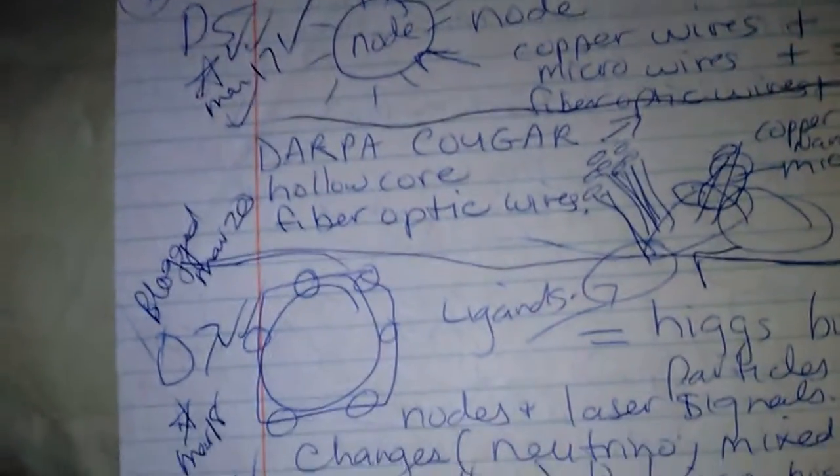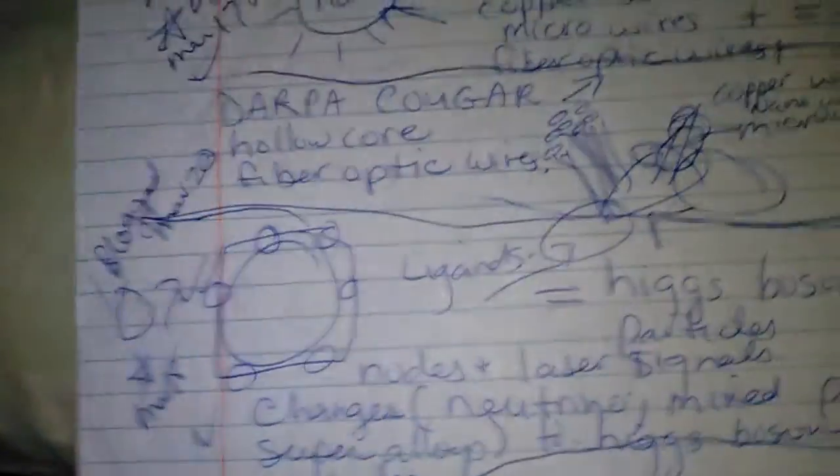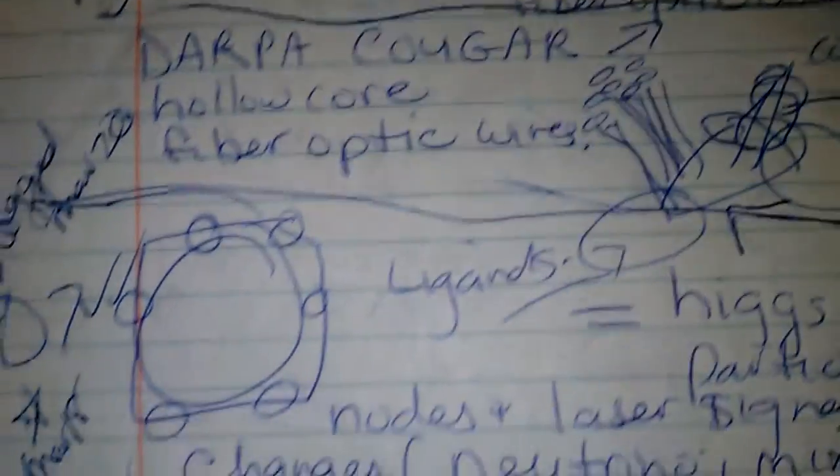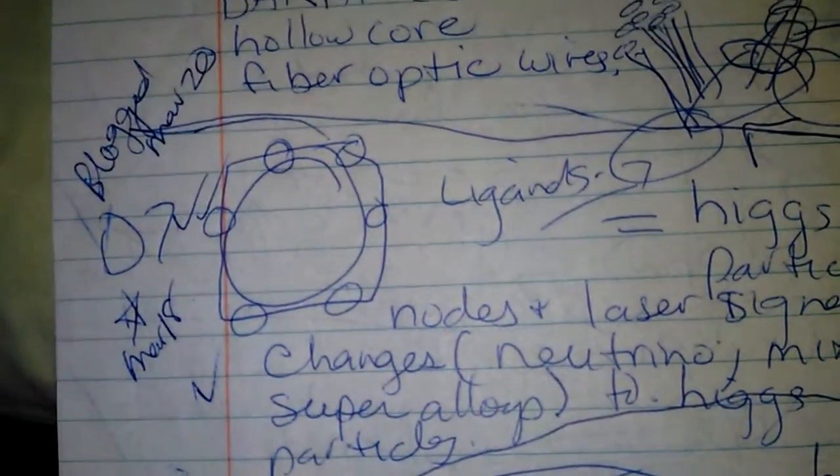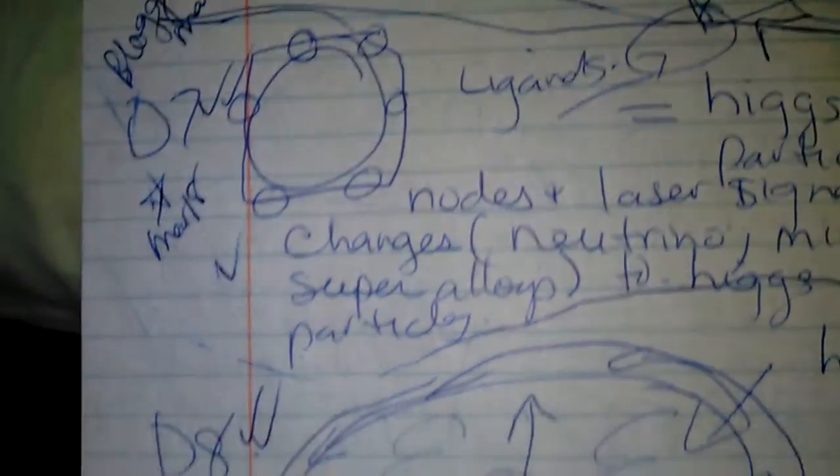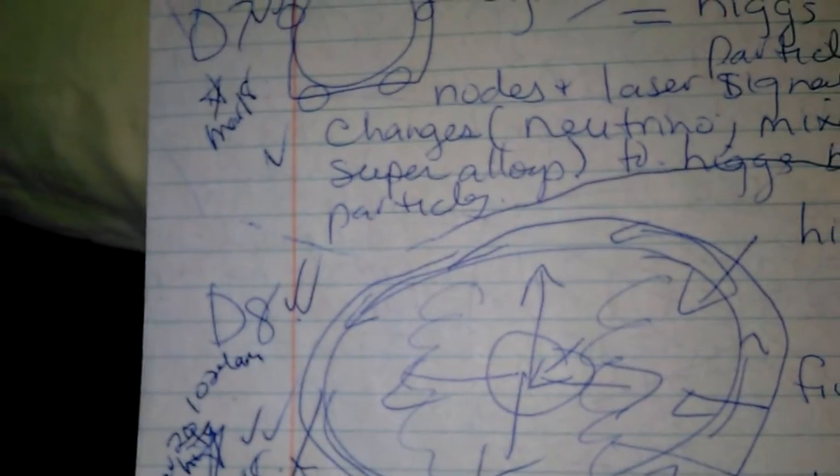This shows the nodes, copper wires, microwires, fiber optic wires from DARPA Cougar. Then it shows the base of them and the ligands that connect them. Over here shows the lasers and the nodes changing the mixed particles.